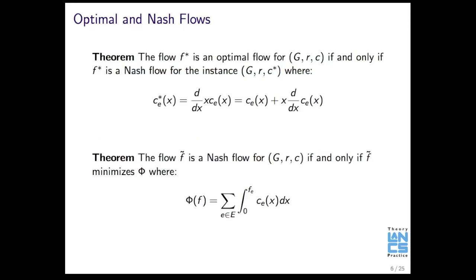So, then there's these two very powerful results. What they basically show is that if you have a given routing game and you replace all the costs with the marginal cost, which is equal to the actual cost plus a little bit, and if you find the Nash flow for this new game, then that's actually equivalent to the optimal flow for the original game. And then equivalently, there's another result that says if we have f tilde, which is the Nash flow for a given game, then it will minimize this function.